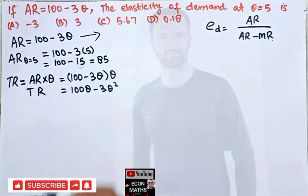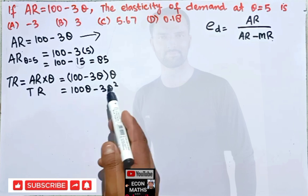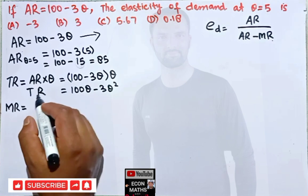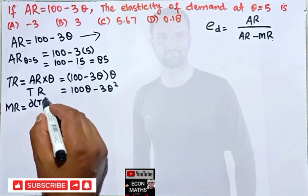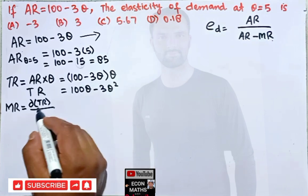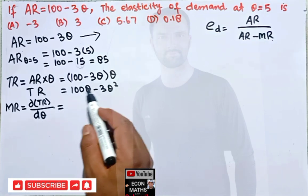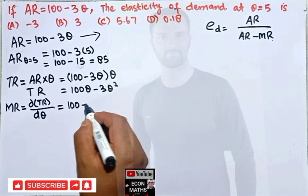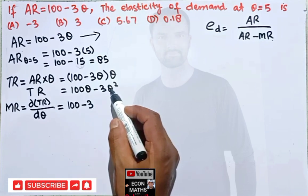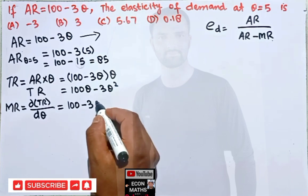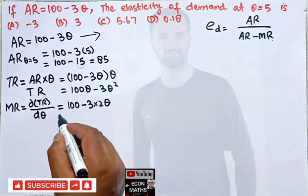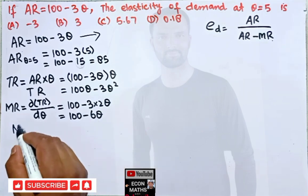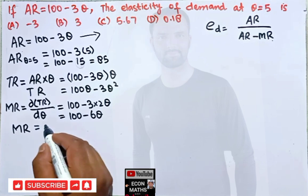To find marginal revenue from total revenue, we differentiate the total revenue function with respect to quantity. Marginal revenue equals d(TR)/dQ. The derivative of 100Q is 100, and the derivative of 3Q squared is 6Q, so marginal revenue equals 100 minus 6Q.